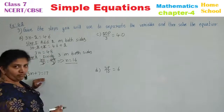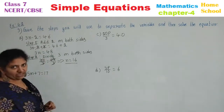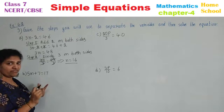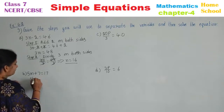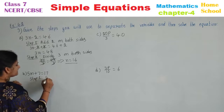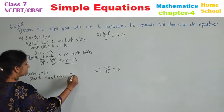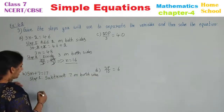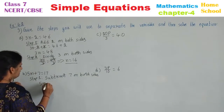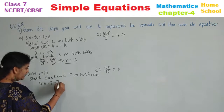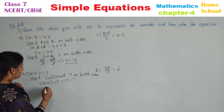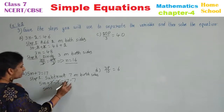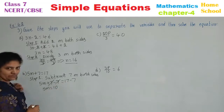See the second problem: 5M plus 7 is equal to 17. First observe the number — number is added, so the first step we need to subtract. Step 1: Subtract 7 on both sides, on left-hand side and also right-hand side. 5M plus 7 minus 7 is equal to 17 minus 7. Plus 7 minus 7 gets cancelled. 5M is equal to 10. Right?